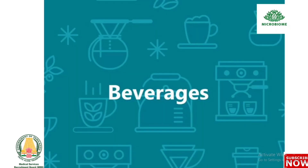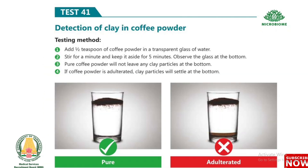Next, about beverages. Test 41: Detection of clay in coffee powder. Add half a teaspoon of coffee powder in a transparent glass of water. Stir for a minute and keep aside for 5 minutes. Observe the bottom of the glass. Pure coffee powder will not leave any clay particles at the bottom. If adulterated, clay particles will settle at the bottom.